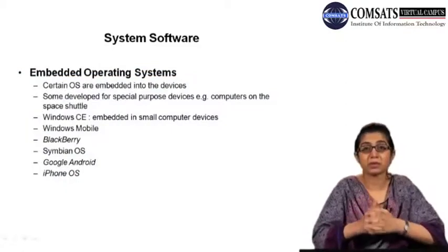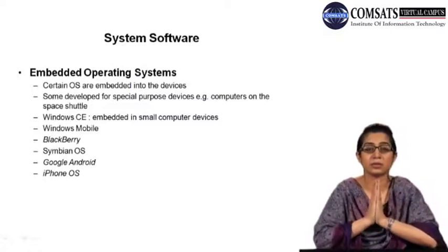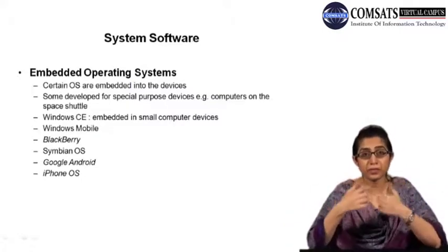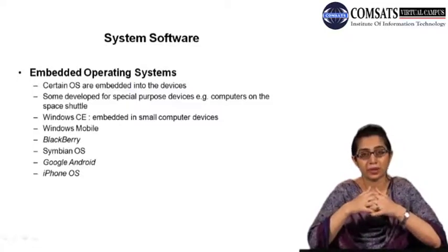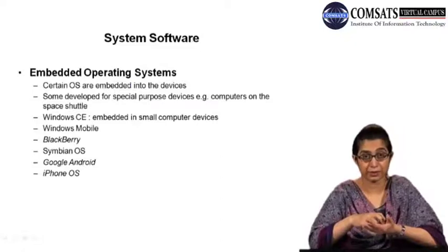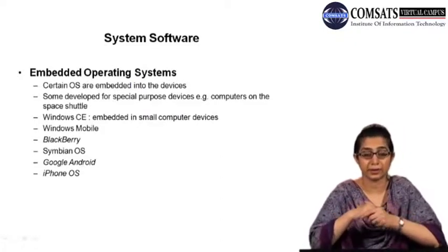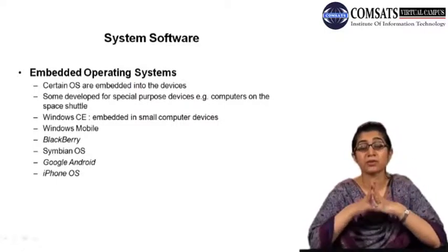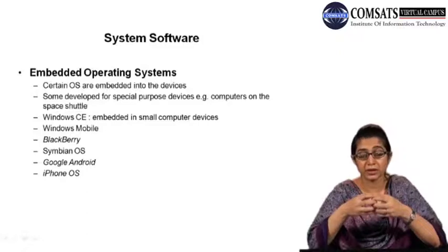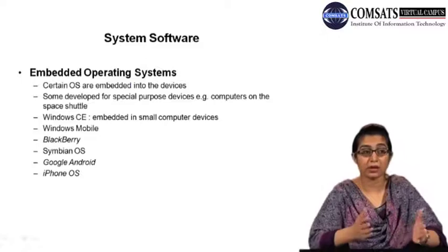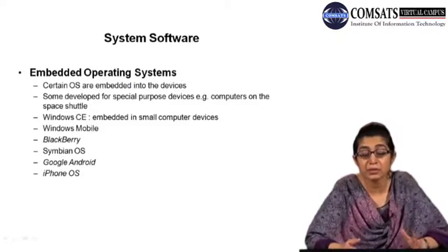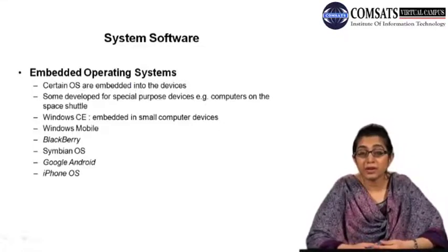There's another category of operating systems — embedded operating systems — meaning there are certain kinds of operating systems that are embedded into the devices themselves. Embedded means their functionality is built in. Some of these operating systems are developed for special purpose devices, for example computers used in the space shuttle. There are small devices and household devices that can have embedded operating systems, for example Windows CE, also called Windows Embedded, that is embedded in small computer devices.